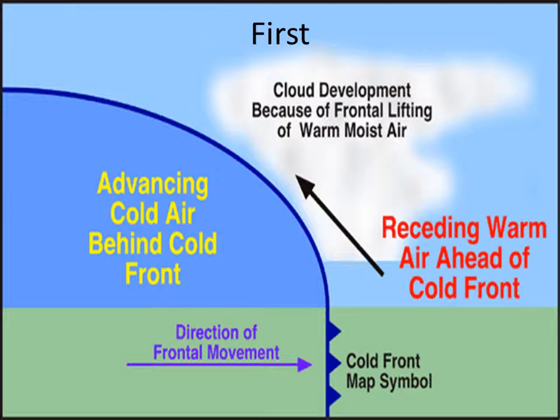Here we have two fronts colliding — the cold front on the left and the warm front on the right. Notice the slant of the cold front. Cold air settles to its lowest level. Warm air rises. And when they collide, the warm air goes up the face of the cold front and over the top. The clouds form along the top where the moist air condenses because of the wind chill factor and also the altitude. Cloud development occurs because of frontal lifting of warm moist air.